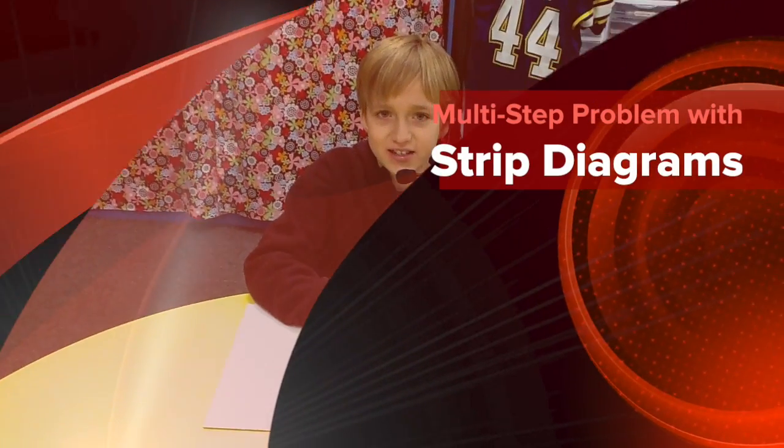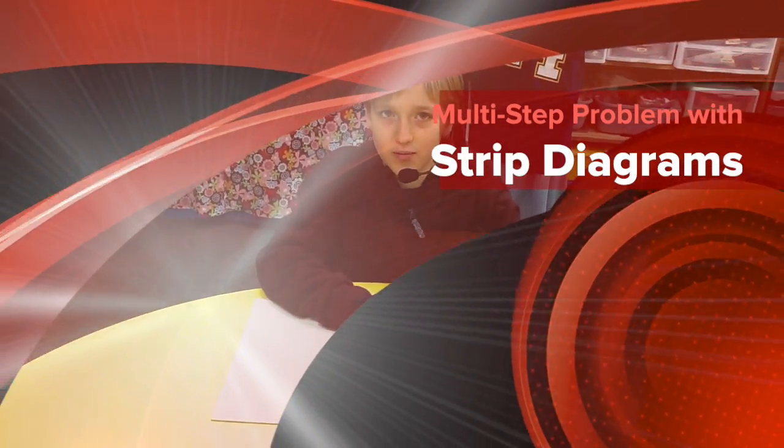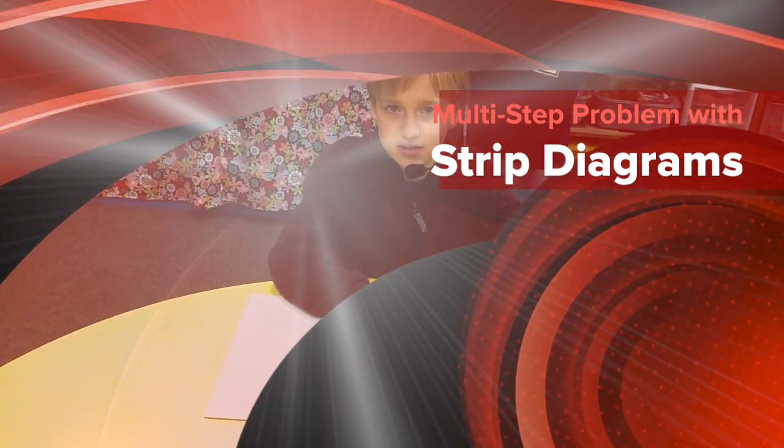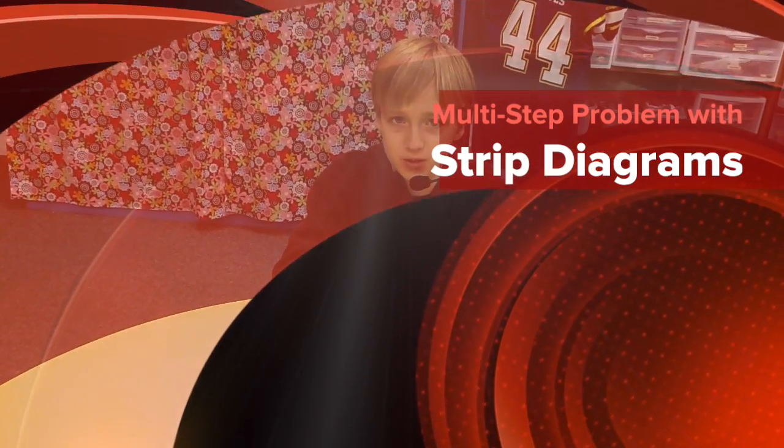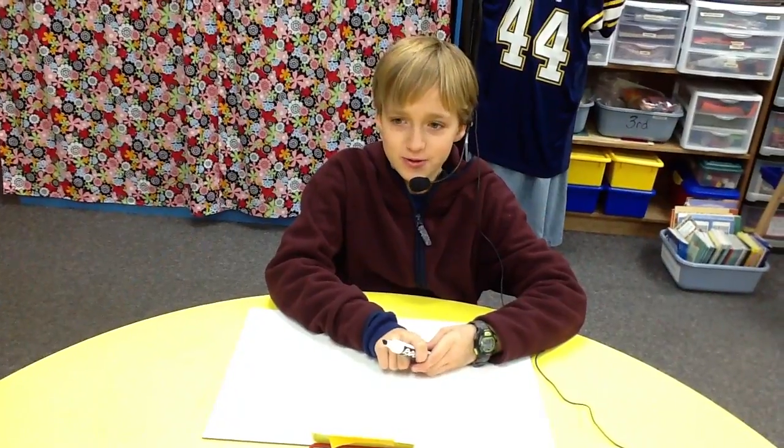Hi, my name is Andrew Meakin. I'm a 4th grade student from Mississippi City's Math House. Today I'm going to show you how to solve a multi-step problem using a strip diagram.